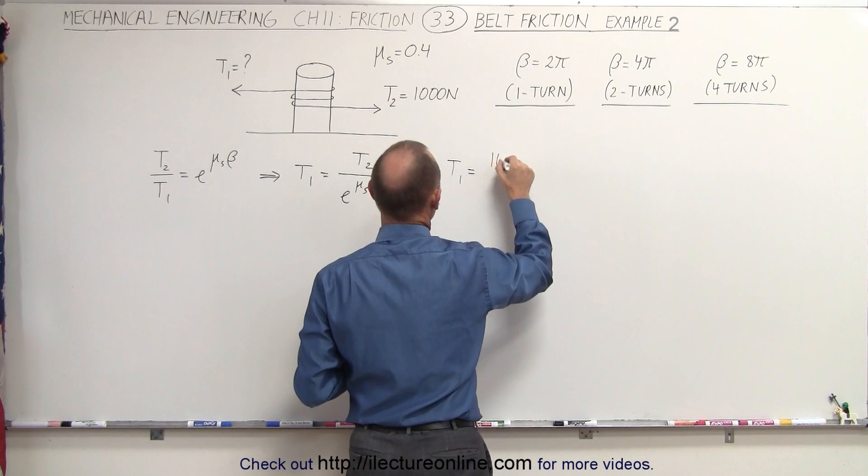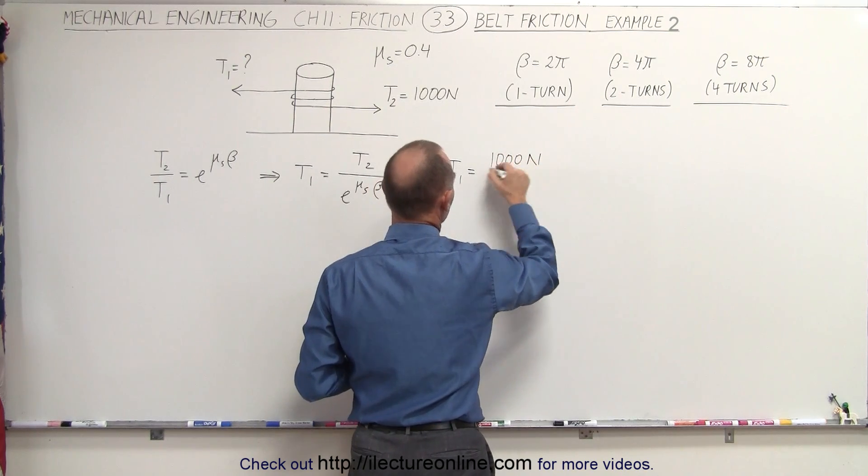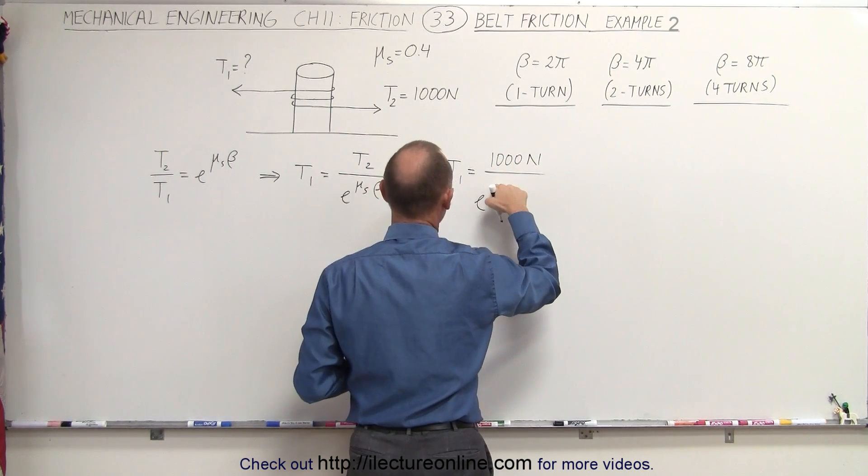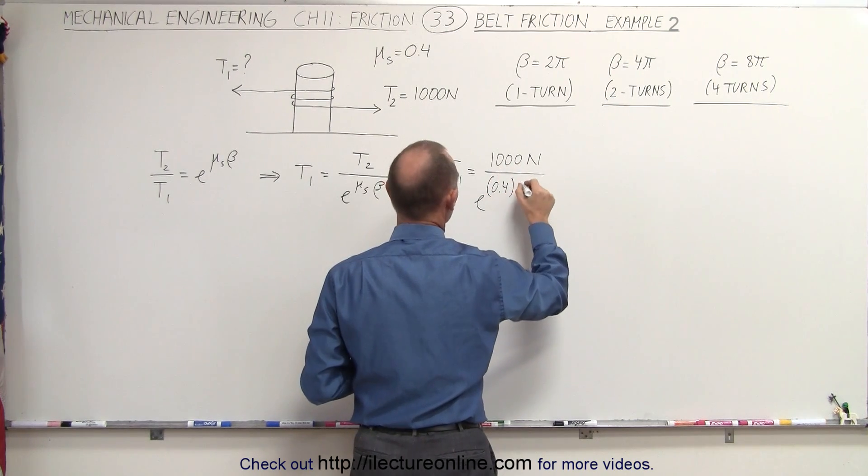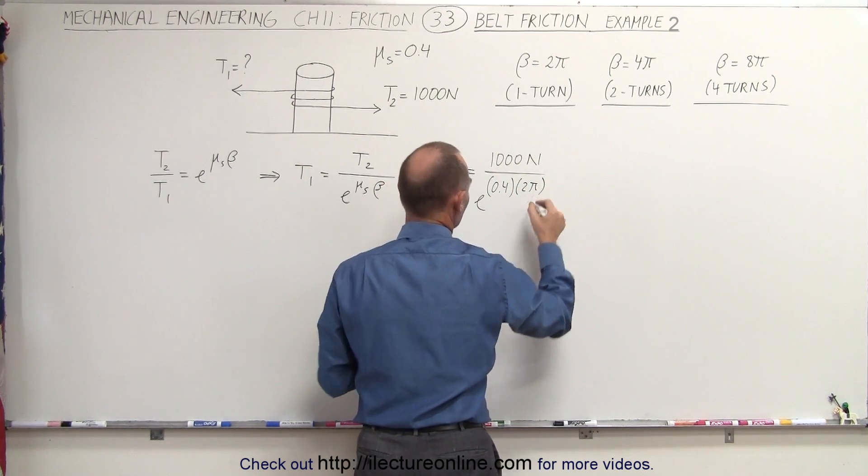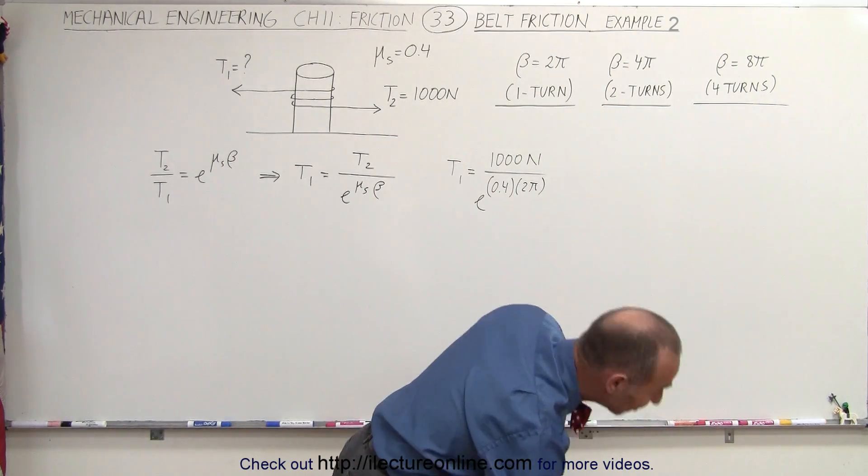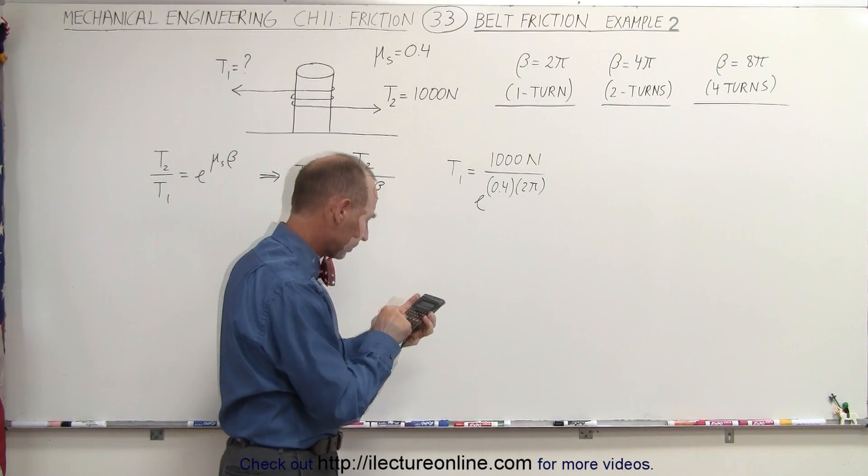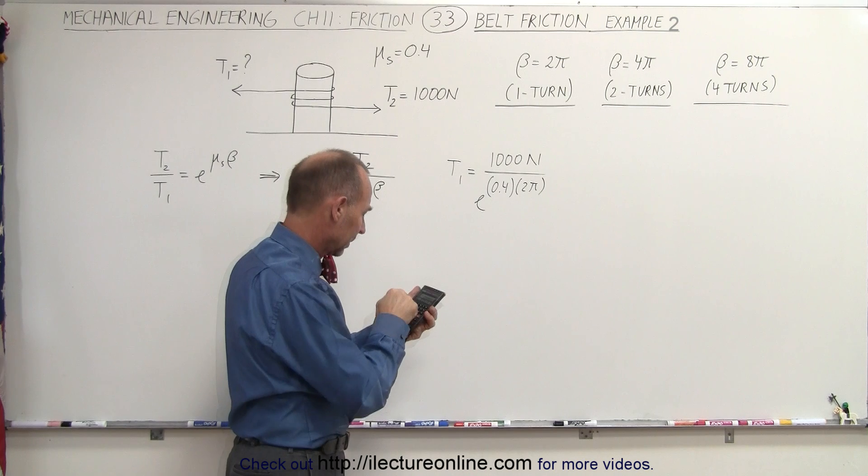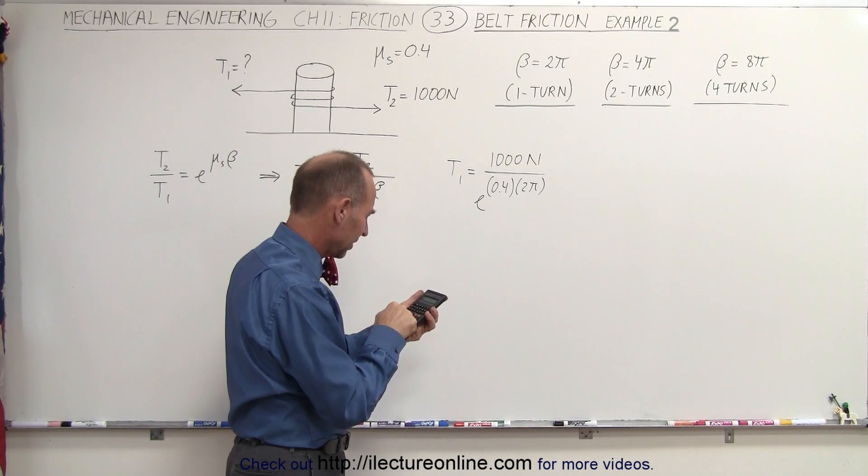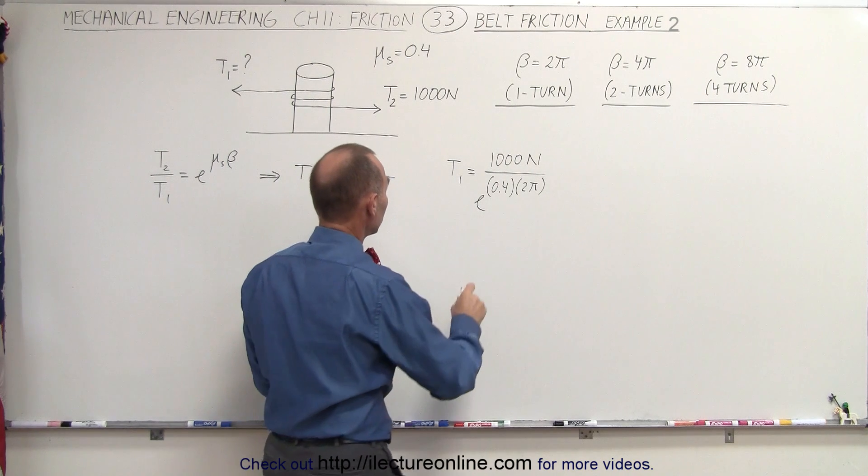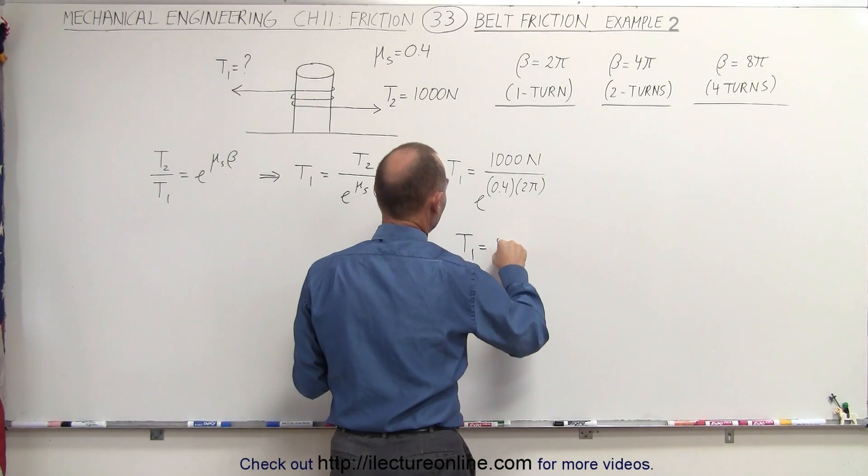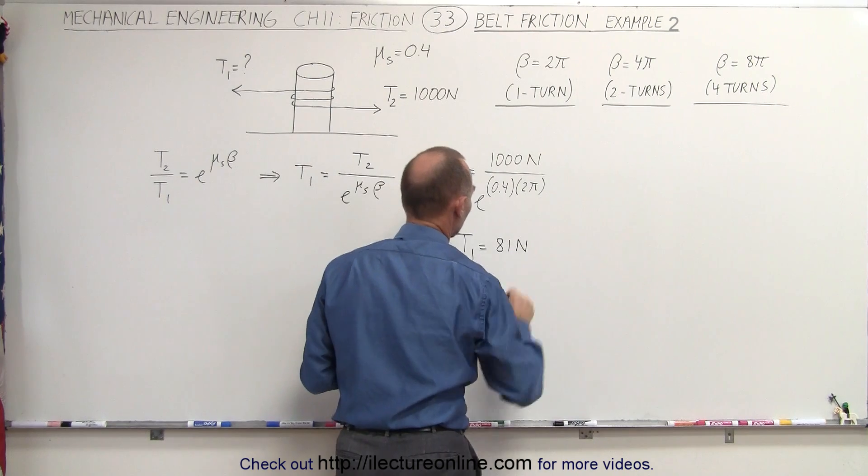T1 is going to be equal to a thousand newtons applied on one side, divided by E to the coefficient of static friction, 0.4 times only one turn, which is two pi radians. And now we can see what that is equal to. Take the inverse, and times a thousand, and it gives us 81 newtons. So T1 is equal to 81 newtons.